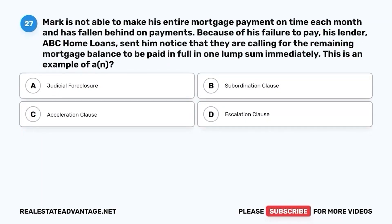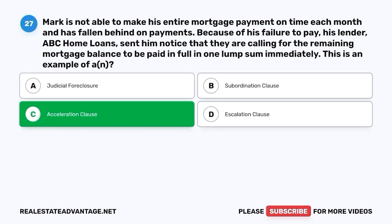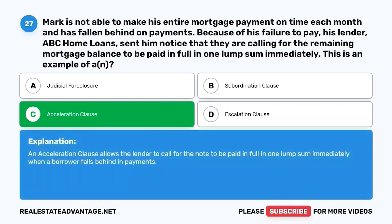Question 27. Mark is not able to make his entire mortgage payment on time each month and has fallen behind on payments. Because of his failure to pay, his lender, ABC Home Loans, sent him notice that they are calling for the remaining mortgage balance to be paid in full in one lump sum immediately. This is an example of: A. Judicial Foreclosure. B. Subordination Clause. C. Acceleration Clause. D. Escalation Clause. The correct answer is C. Acceleration Clause. An acceleration clause allows the lender to call for the note to be paid in full in one lump sum immediately when a borrower falls behind in payments.